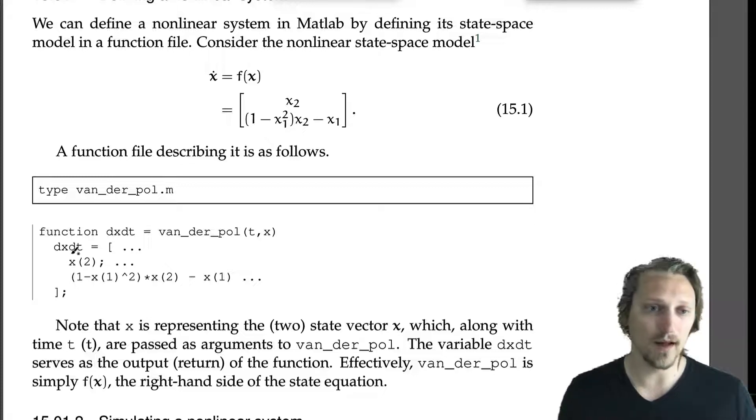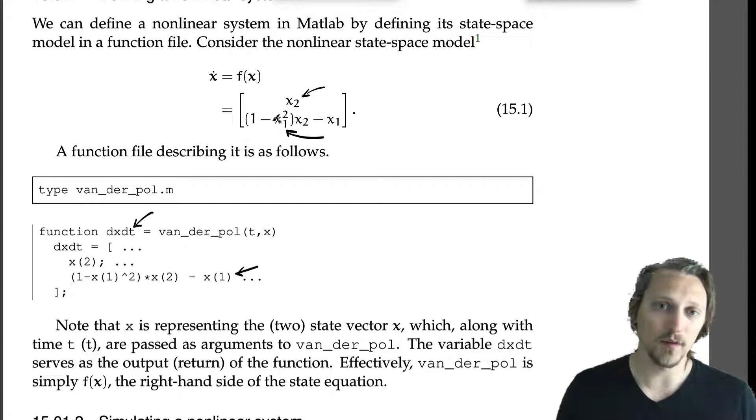Then we return—how we declare a return in MATLAB functions is to set the variable that we put on the left-hand side of the equals after function. So dxdt equals, and then it has to return a vector of the same size as x. So it returns x(2), which is this value there, x₂, and then it returns this expression, which is the lower term here.